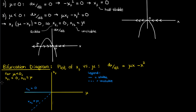What about when μ was zero? At μ equals zero, we found only one fixed point, xf equals zero, and that fixed point was half-stable. So I'll circle the fixed point xf=0 at μ equals zero on the bifurcation diagram, and shade half of this circle to denote that it is a half-stable fixed point.